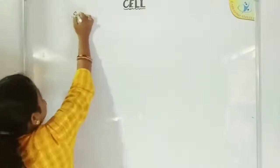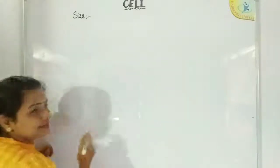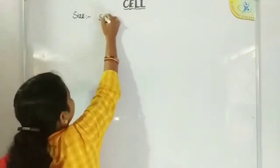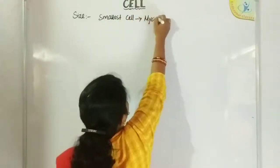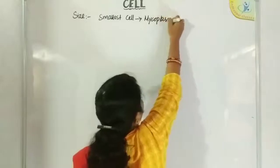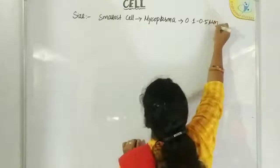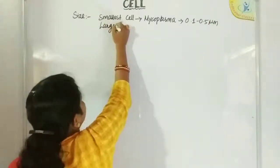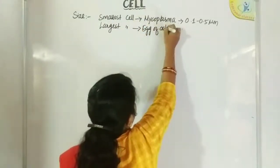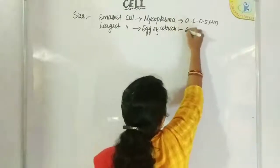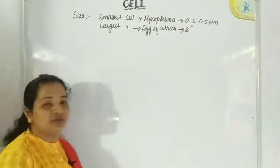First, moving to size. We will discuss the two extreme-sized cells. The smallest cell is that of mycoplasma, with a size ranging between 0.1 to 0.5 micrometers. The largest cell is that of the egg of an ostrich, which is nearly about 6 inches. So these are the two extreme-sized cells found in nature.